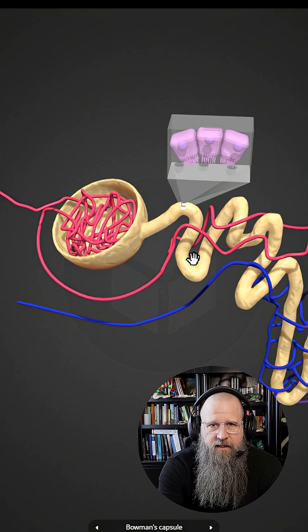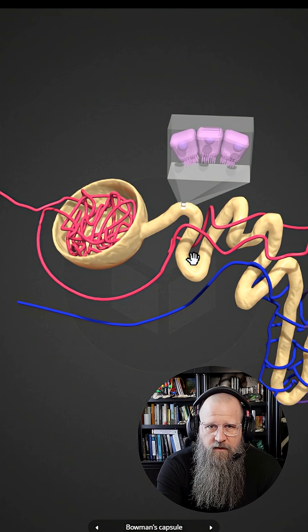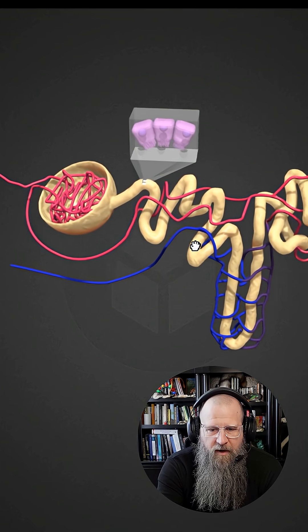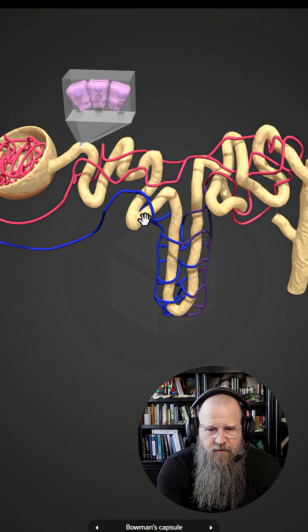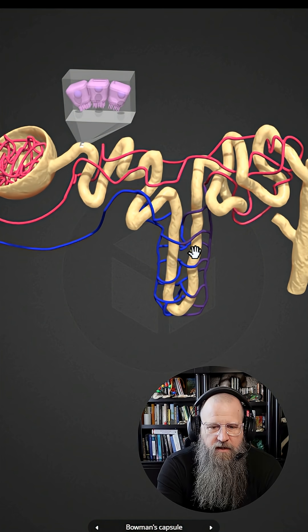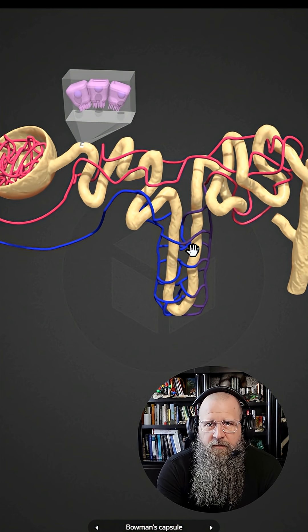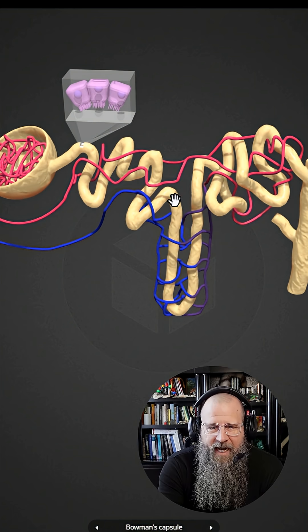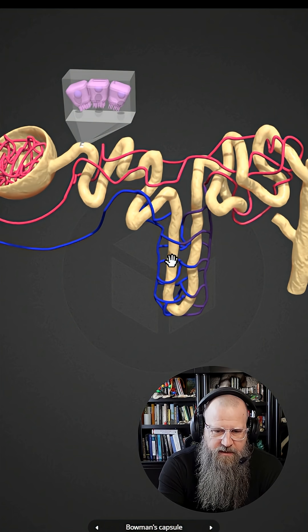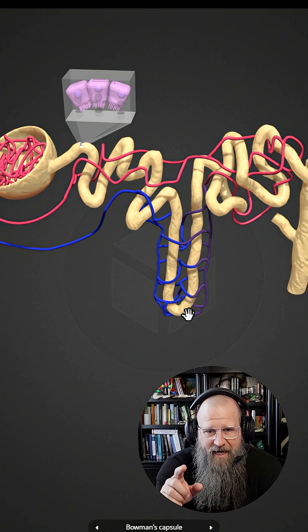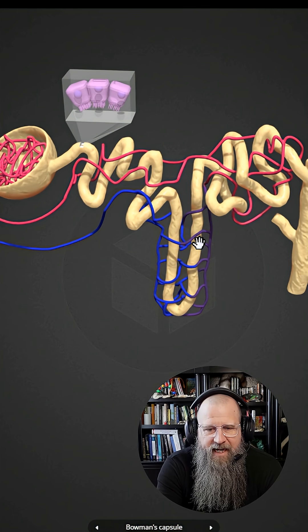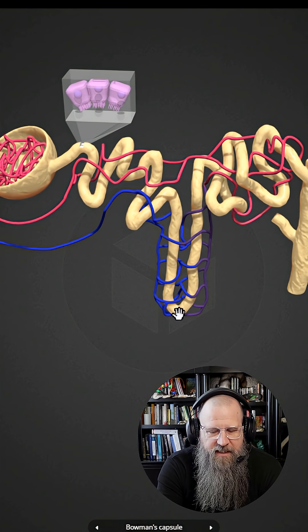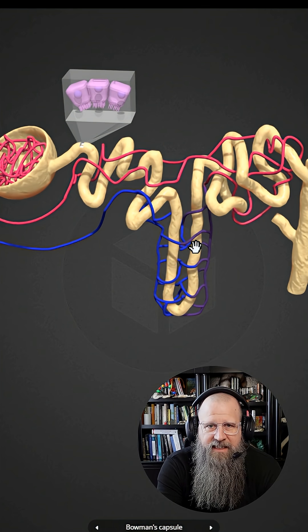And this first part of the duct is known as the proximal convoluted tubule. From the proximal convoluted tubule, material moves through into the loop of Henle or what some people call the nephron loop. It has a descending limb. So it goes down first, then it hits the loop where it flips back around and then comes up the ascending limb. So over here we have the descending limb, over here we have the ascending limb.